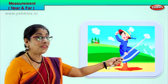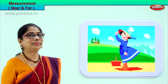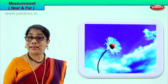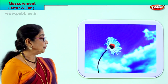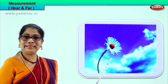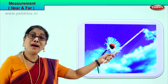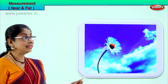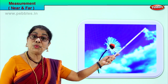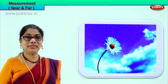Let's take another picture and learn the measurements near and far. Look at this flower - it is near. We look at that cloud far away. The flower is near, and this little white cloud is far away in the sky. Near, far.